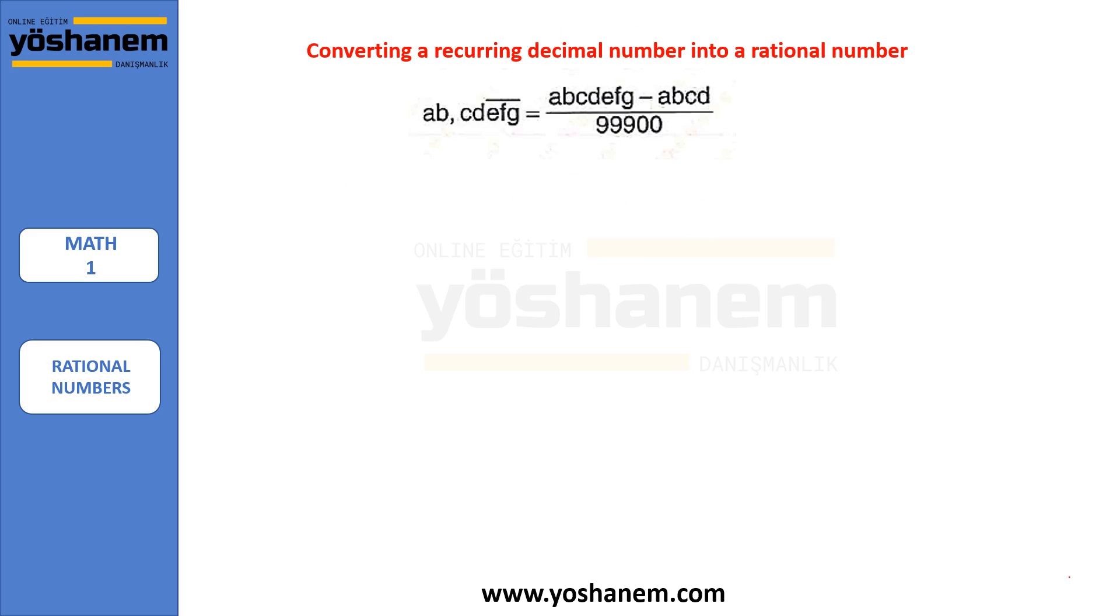What if you have a complex recurring decimal number? How do you convert it? This rule helps us to convert it easily. I'm going to explain the rule.